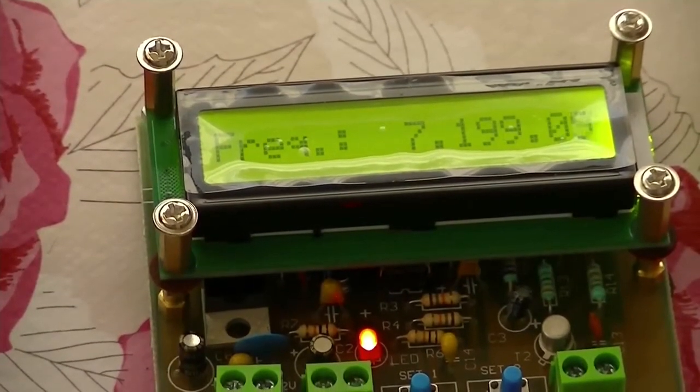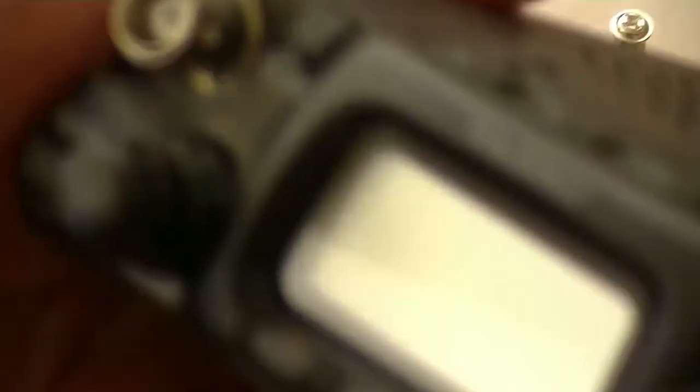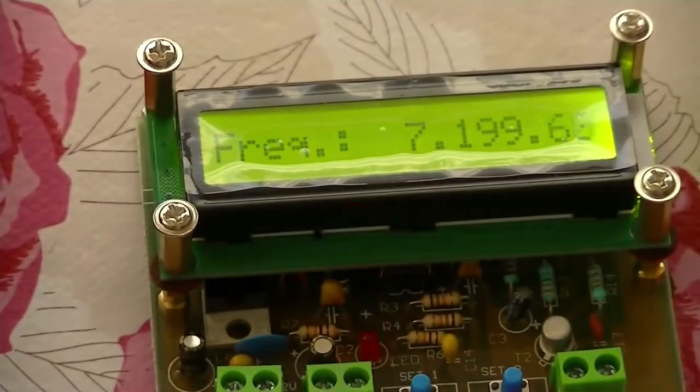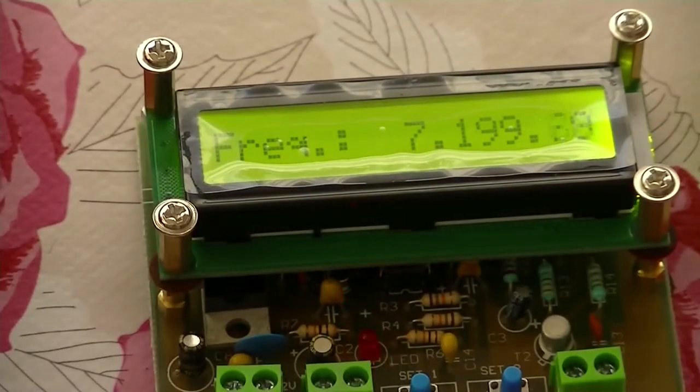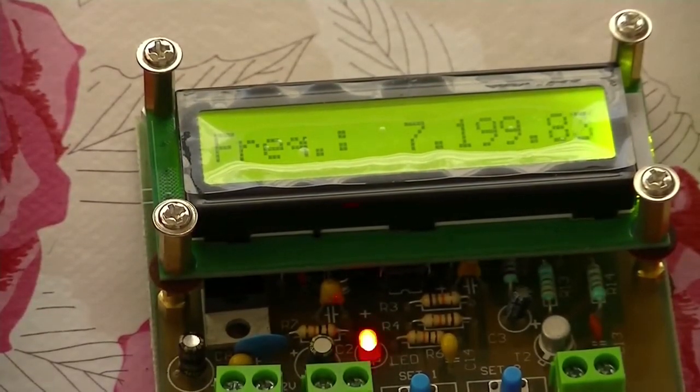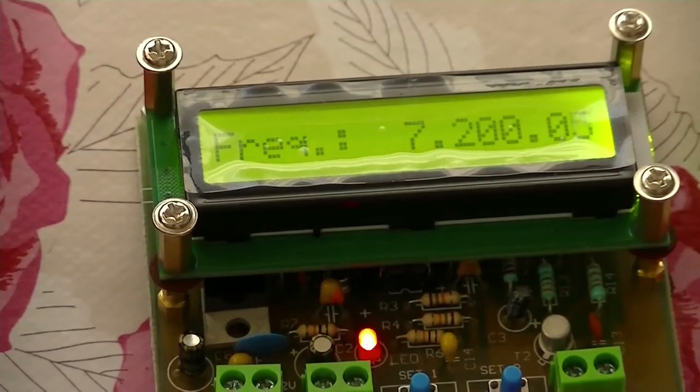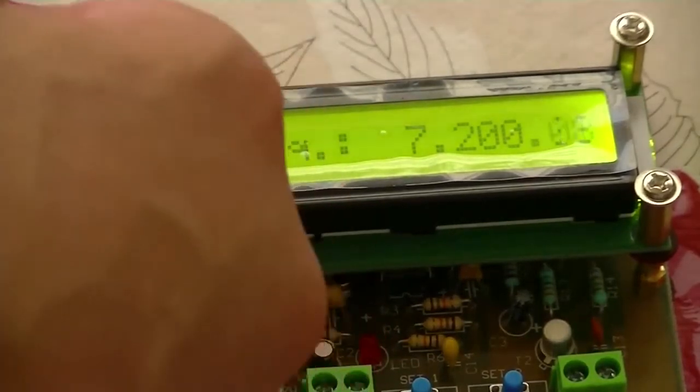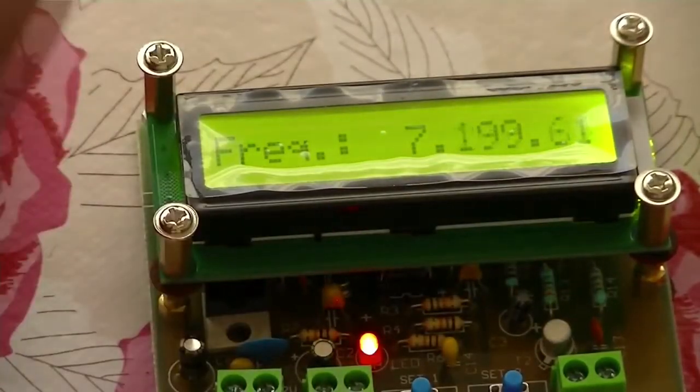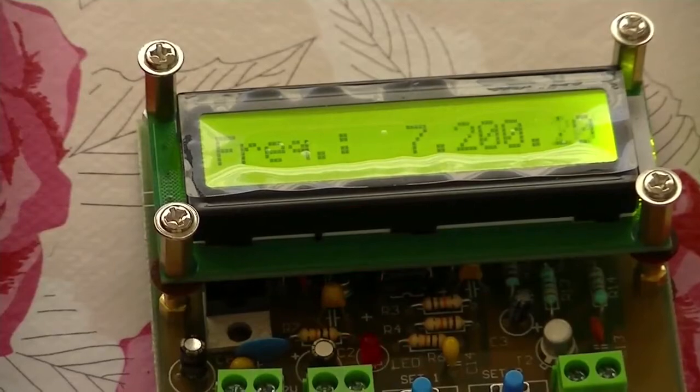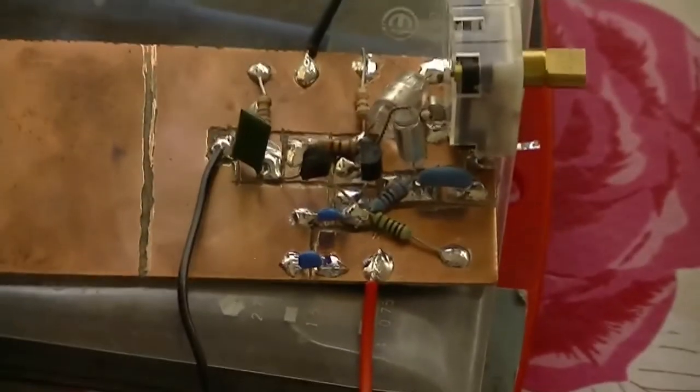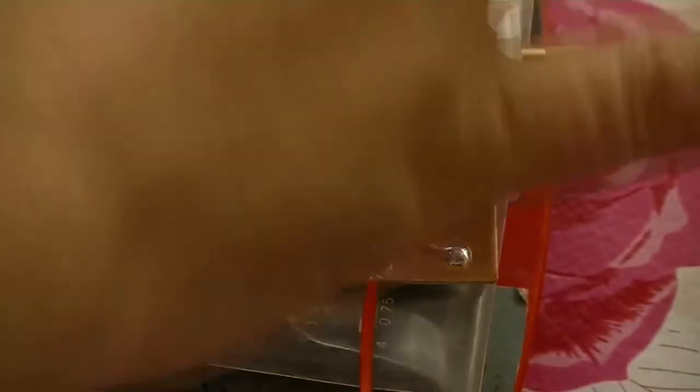I've got my little Yaesu transceiver, just sitting there out of focus, and it's picking it up. So you can sort of see, I'm putting my hand near it, and the frequency fluctuates.